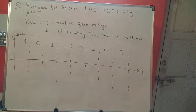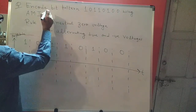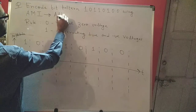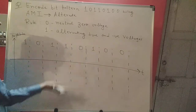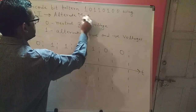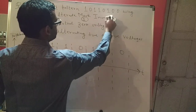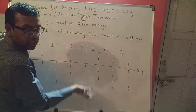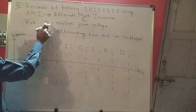We have to encode the given bit pattern using Alternate Mark Inversion. AMI stands for Alternate Mark Inversion — 'mark' means the bit one, and 'alternate' stands for alternating between the positive and negative part of the time axis. So alternate mark inversion means your bit one will be alternating between the positive part and the negative part of the time axis.